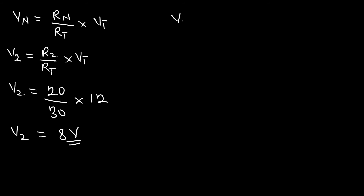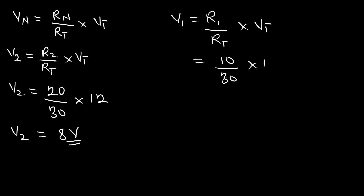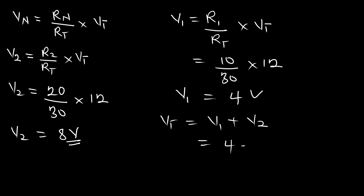We can also calculate V1, which is R1 over RT multiplied by the total voltage — that is 10 over 30 multiplied by 12 — giving us V1 as 4 volts. You will see that VT is indeed equal to V1 plus V2, which is 4 plus 8, giving us 12 volts. This confirms the voltage divider approach for finding voltage drops across any resistor in a series circuit.